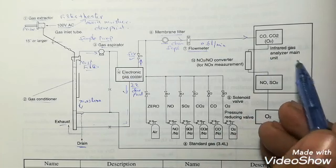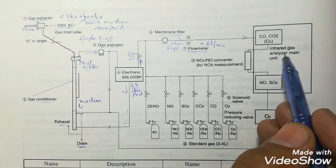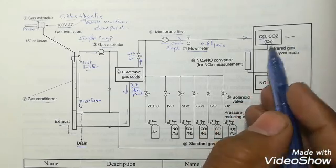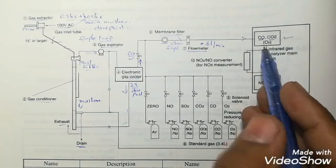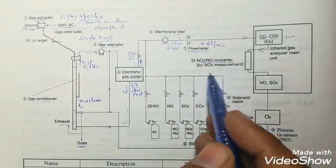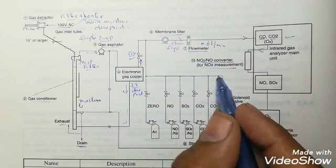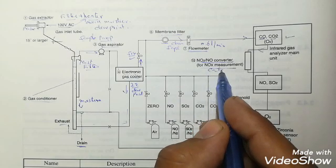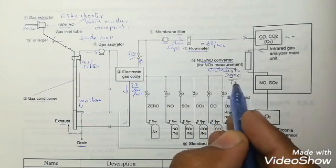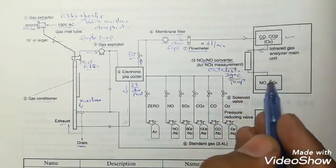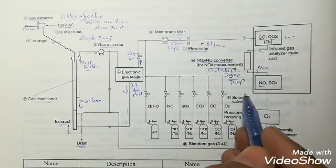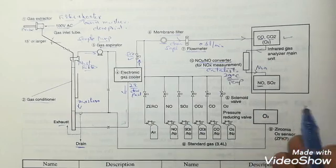Then the gas analyzer, which is a CO or CO2 module, which is an infrared gas analyzer module, this is the main unit. It will measure the CO inside the sample. Then this sample reaches the NO2 to NOx converter. This converts the NO2 into NOx. Here we maintain the temperature of 220 degrees centigrade. We use a catalyst to convert NO2 into NOx, then NOx is measured in this second module.